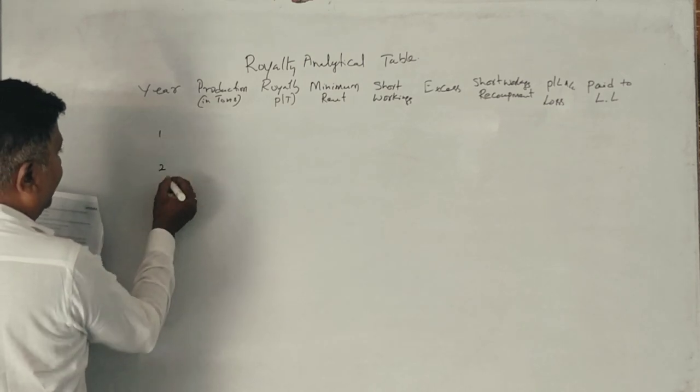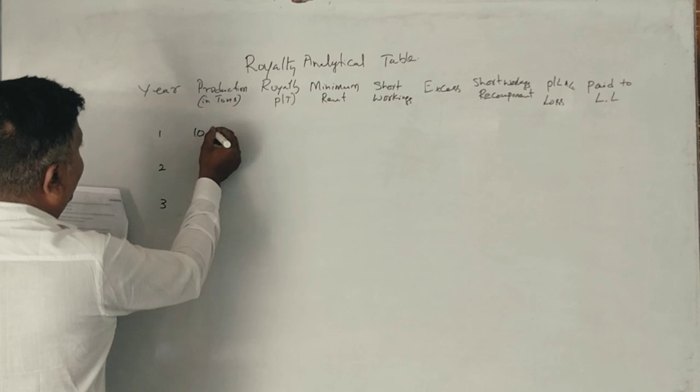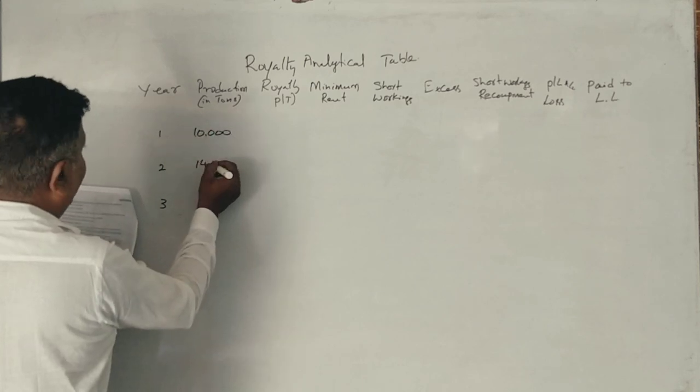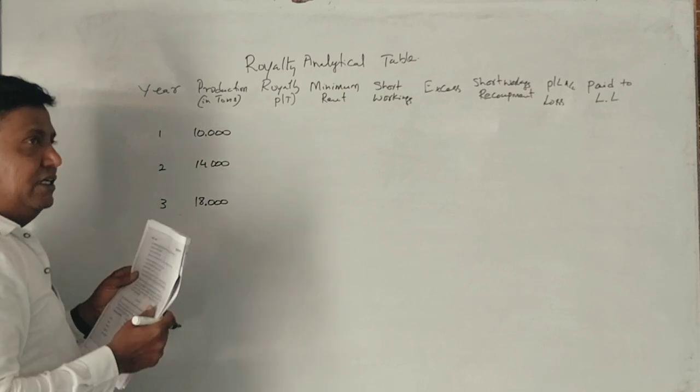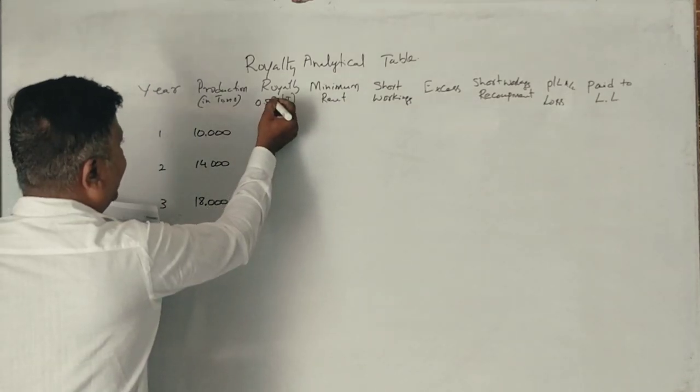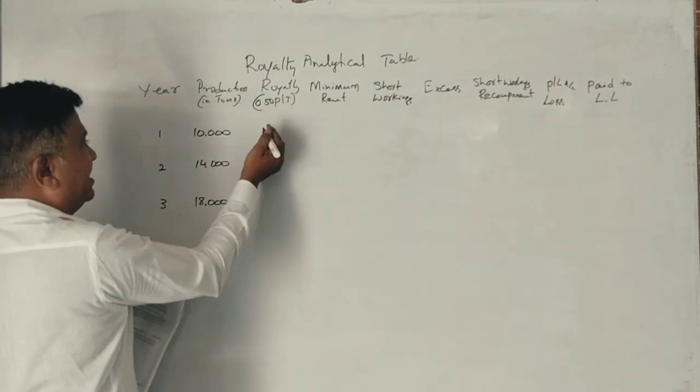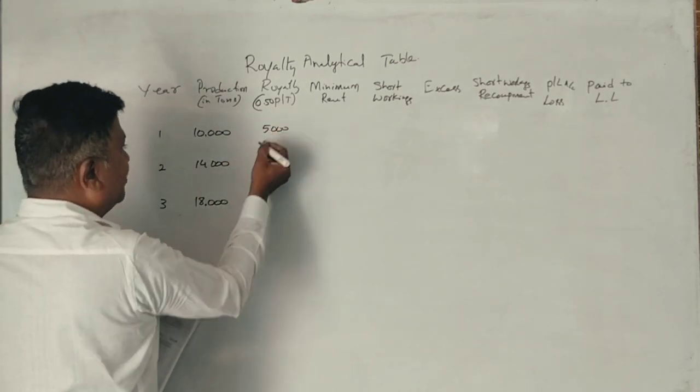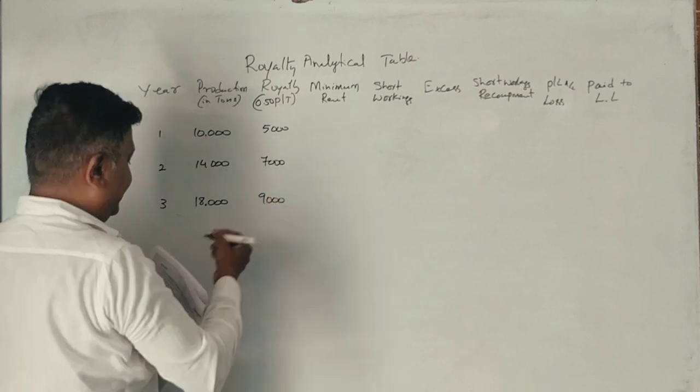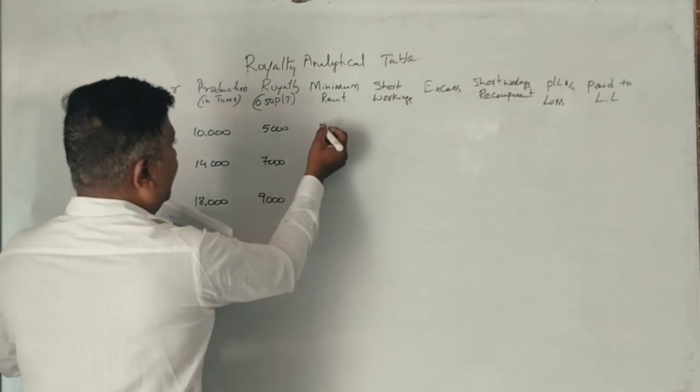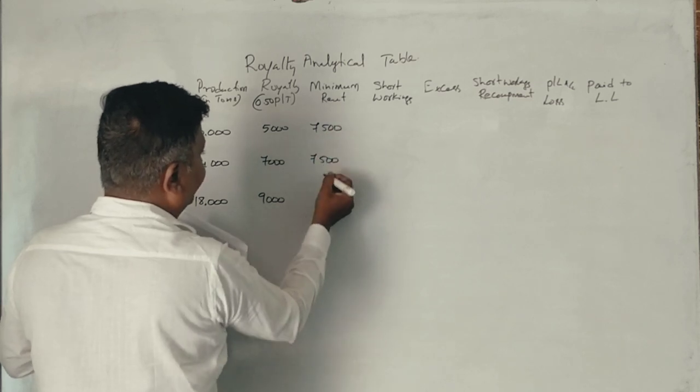Setting up the table with years one, two, three and production of 10,000, 14,000, and 18,000 tons. Royalty at ₹0.50 per ton gives us ₹5,000, ₹7,000, and ₹9,000. The minimum rent is ₹7,500 per annum for each year.